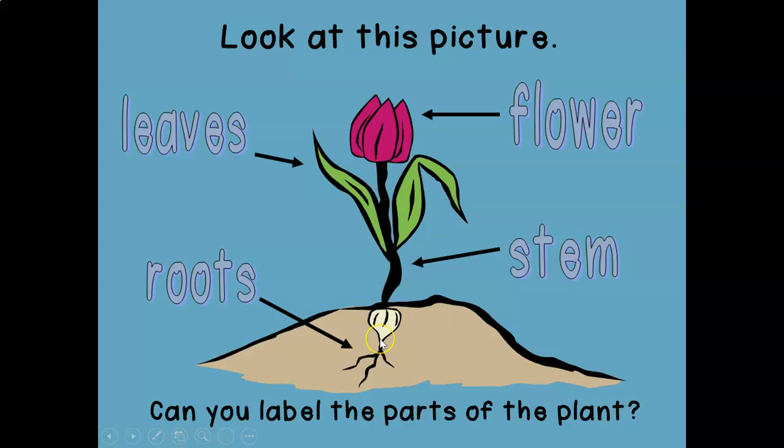Now look at this picture that is showing on the screen. This picture is of a plant and it has the main four parts already labeled for you. This is the roots, that's the stem, this is the leaves, and that's the flower.